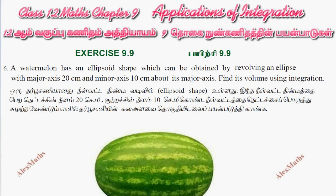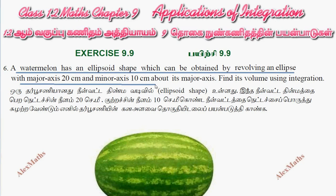Hi students, this is Alex. Question number 6: a watermelon has an ellipsoid shape which can be obtained by revolving an ellipse with major axis 20 centimeters and minor axis 10 centimeters about its major axis. We will find the volume using integration.